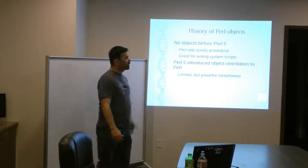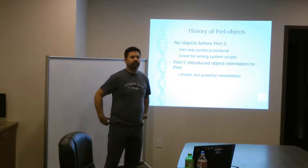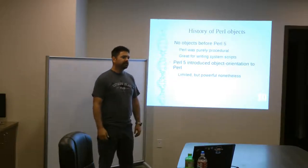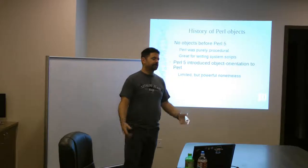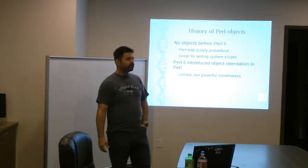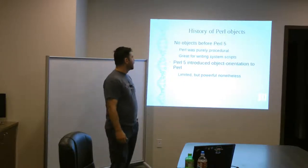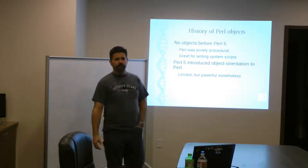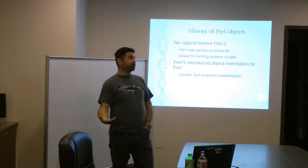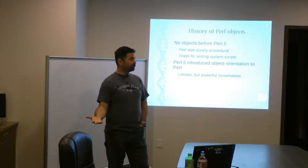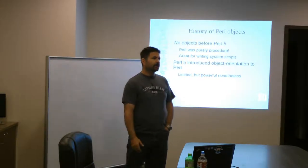First of all, history of Perl objects. Perl version 5 was the first version of Perl to feature any kind of object-oriented ideas, concepts. Prior to that, it was a very procedural language, which was fine for what people were using Perl to do in the early, I guess Perl was like 87, when Perl version 1 came out.